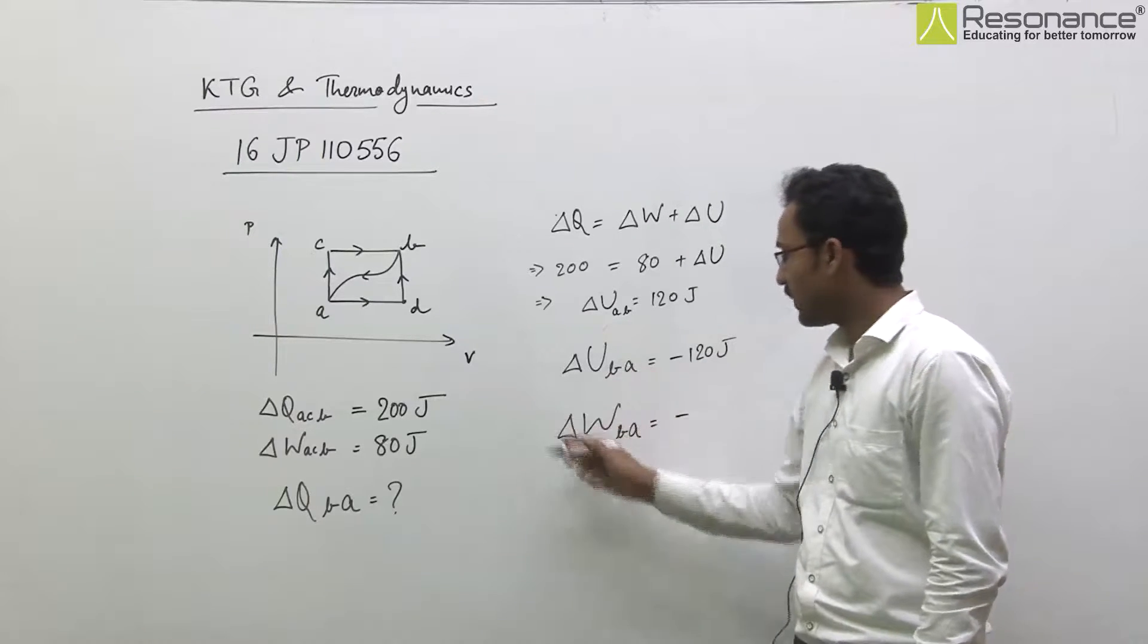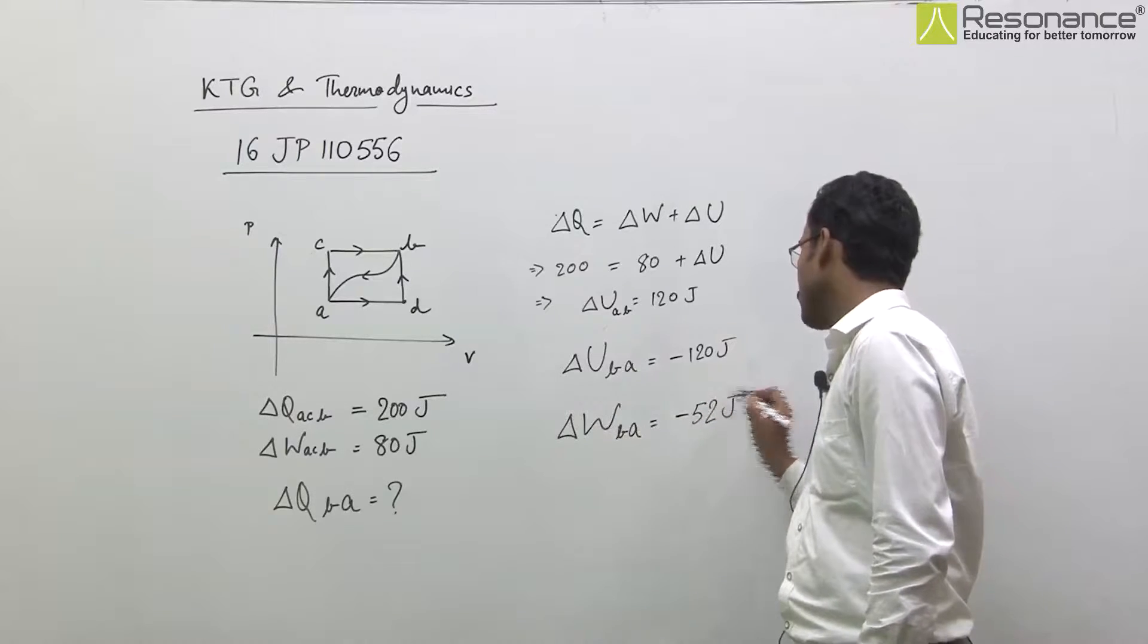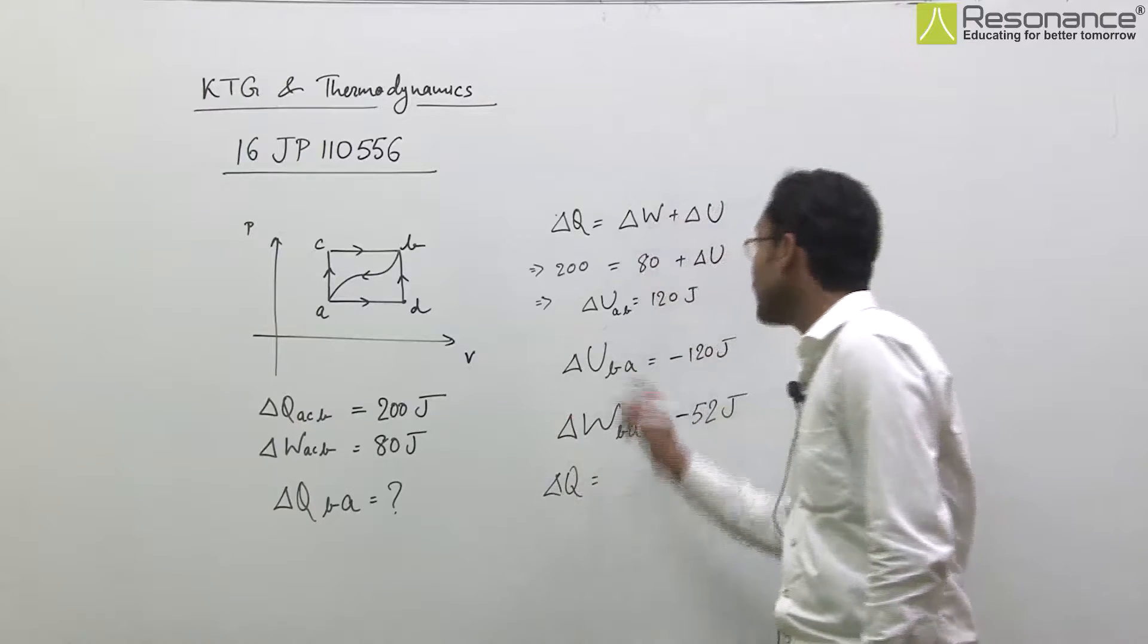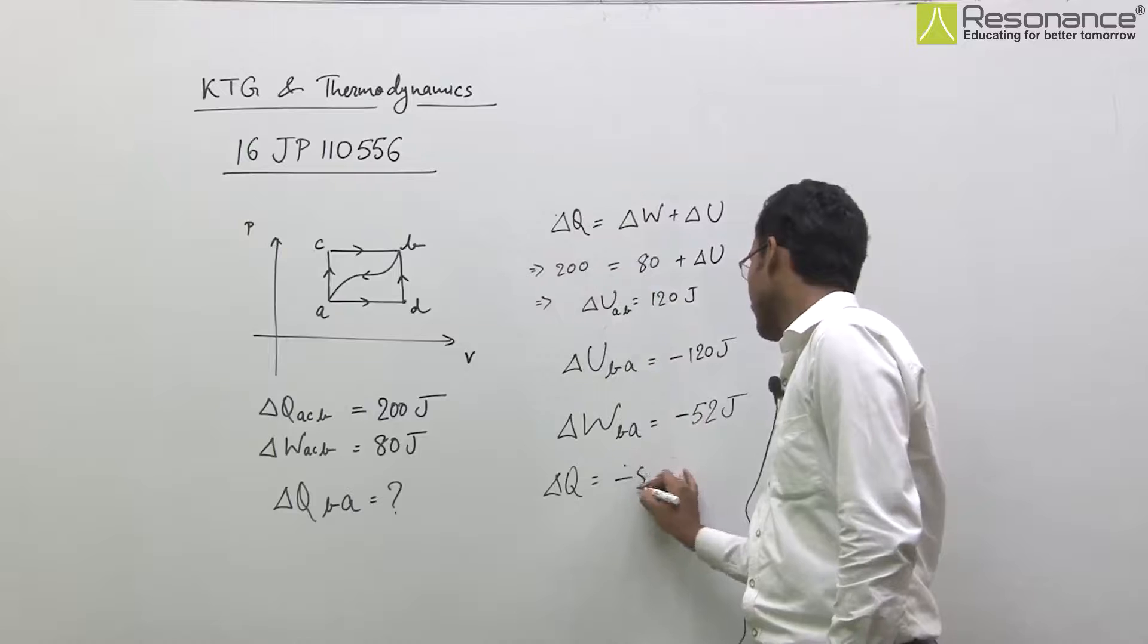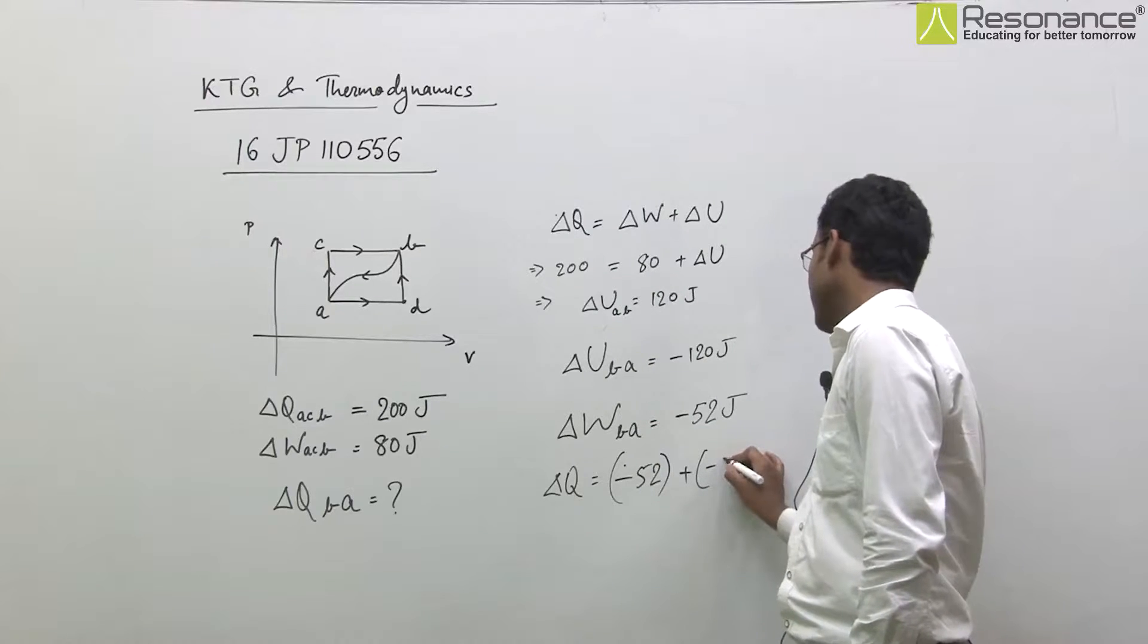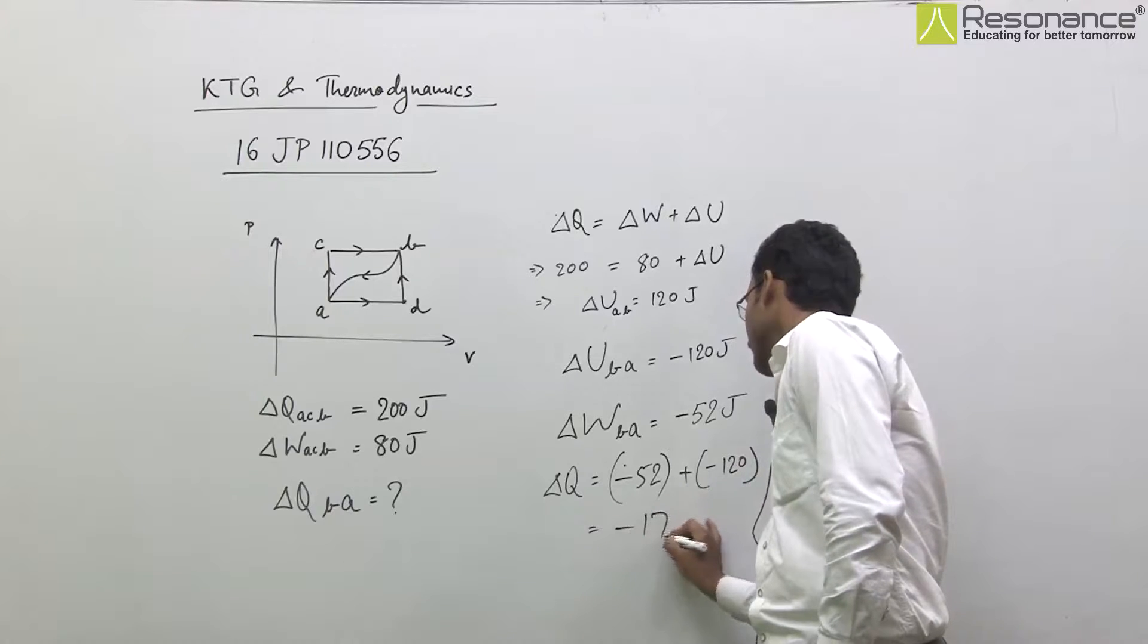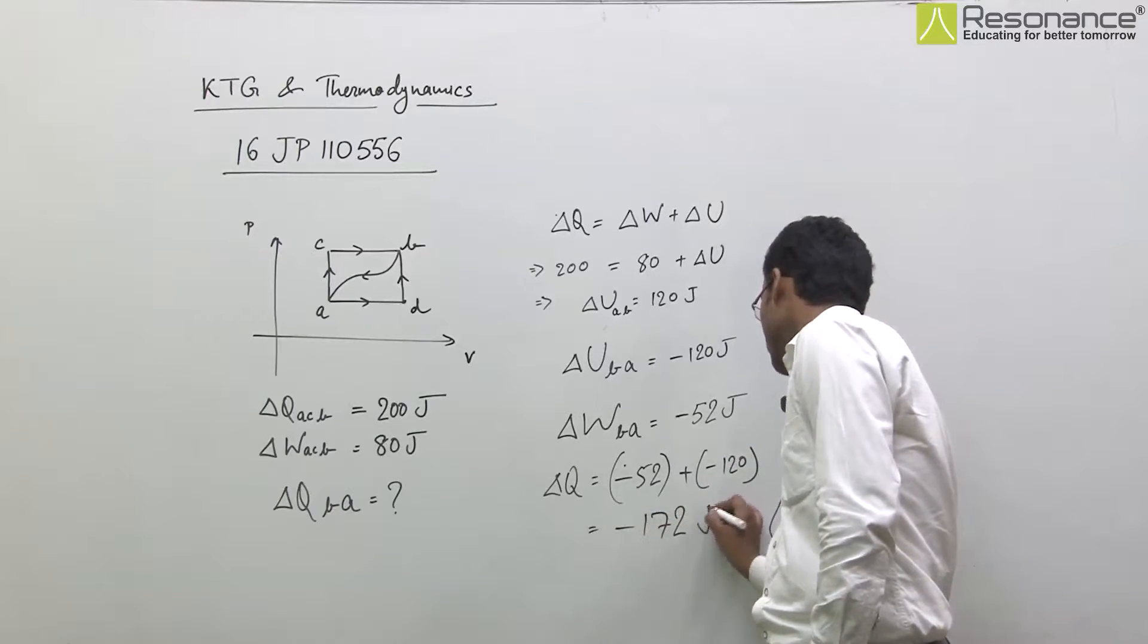It means work done by the gas is minus 52 joule. And again by using first law of thermodynamics, minus 52 joule plus change in internal energy minus 120 joule will be equal to minus 172 joule.